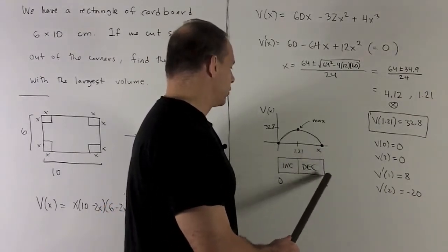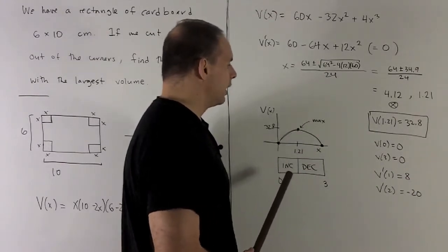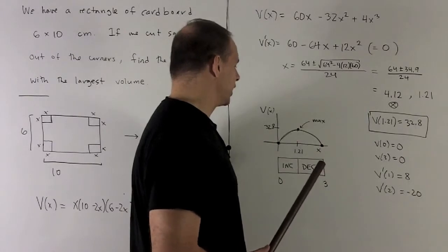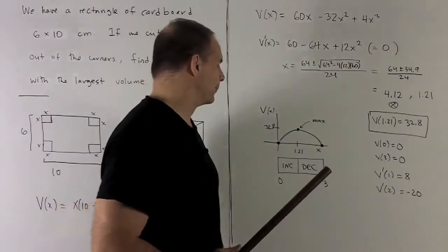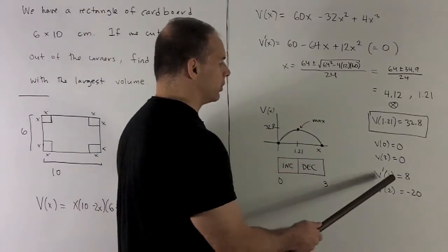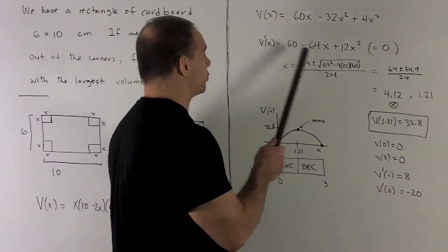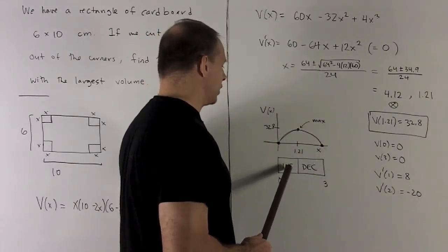I'm going to look for increasing and decreasing now. So I'll just split the region along our critical point. And then I just need to check one point in each region against the derivative to determine if we're increasing or decreasing. So on this side of 1.21, I'm going to choose one. I put it in the derivative. Eight comes out. So that's going to be increasing on this side.